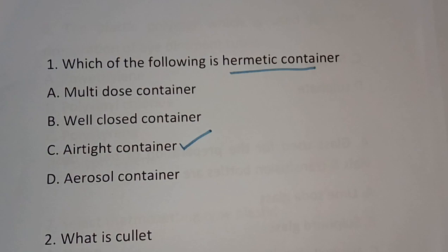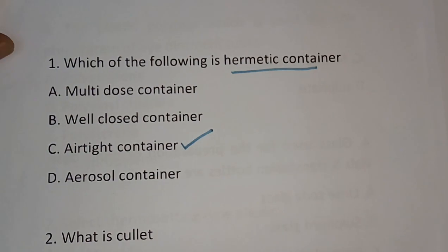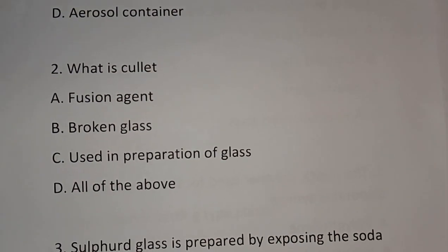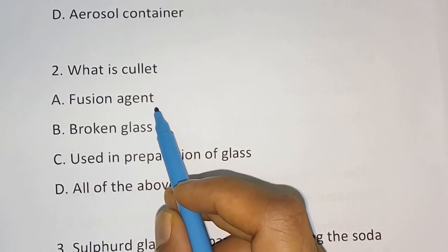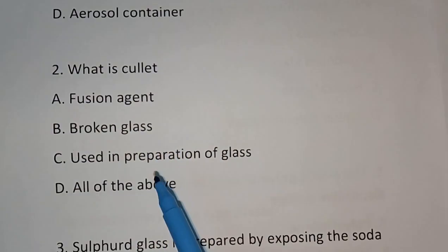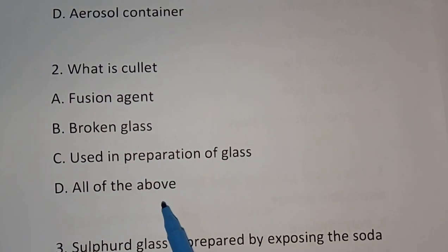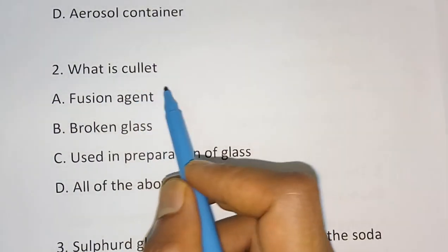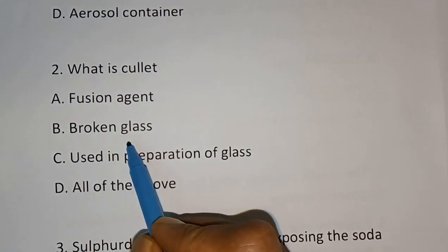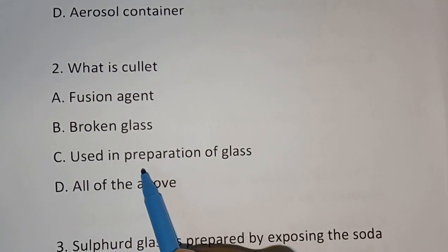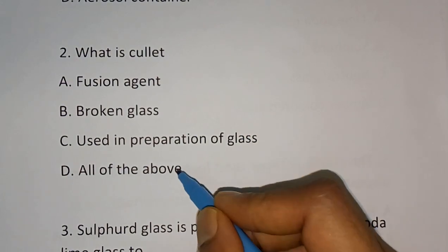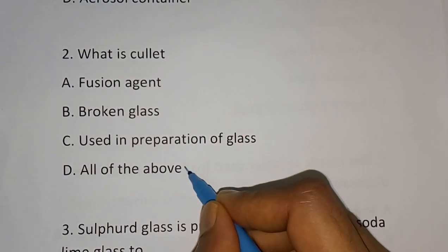Question number 2: What is cullet? Options are: fusion agent, broken glasses used in preparation of glass, or all of the above. The correct answer is all of the above.